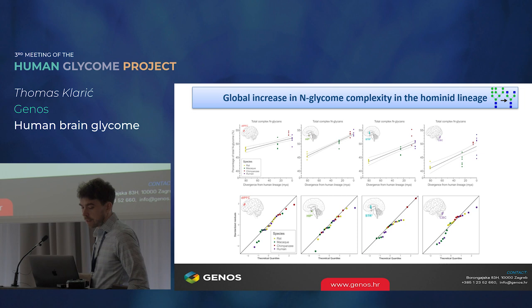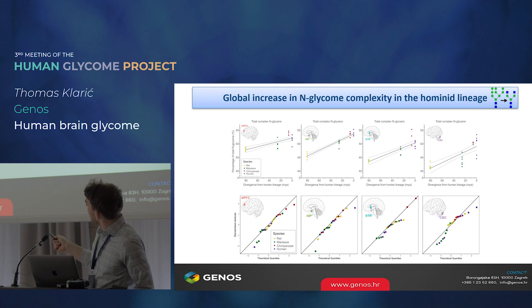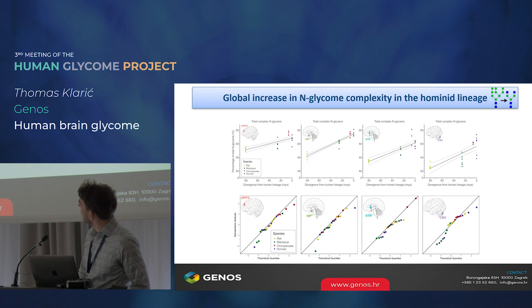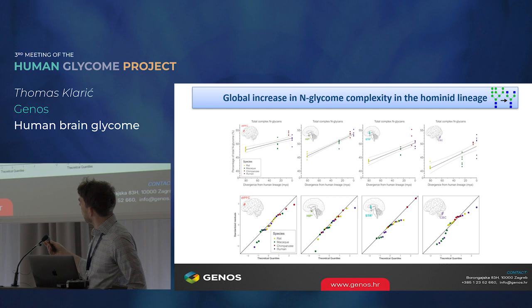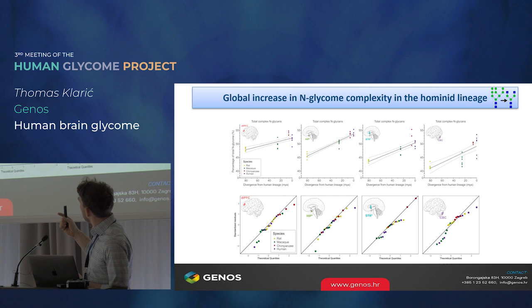The final evolutionary trend is the gradient in complexity. Looking at the dorsolateral prefrontal cortex, as we move from rats to hominids there's been a gradual linear increase in the abundance of complex N-glycans. This was true not just for the PFC but in all of the regions we investigated, so it seems to be a global, brain-wide trend in increased N-glycan complexity. When we investigated the rate of change, it seems to have been a gradual process — none of the changes deviated too much from the expected rate given the evolutionary distance between the organisms. There haven't been major jumps in any species; it's been gradual throughout evolution.